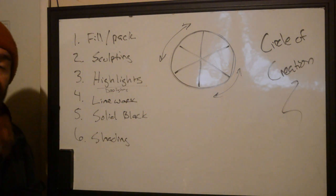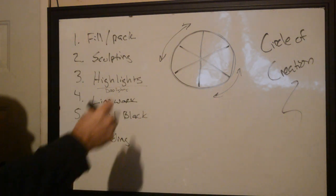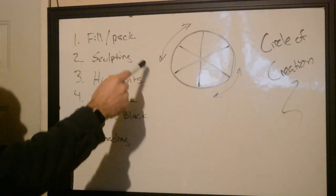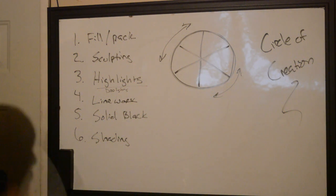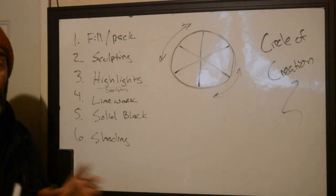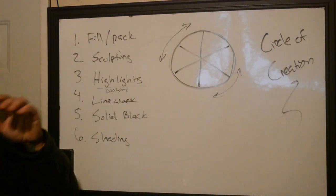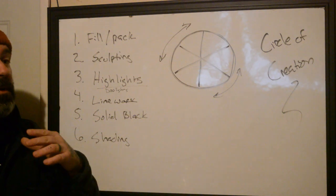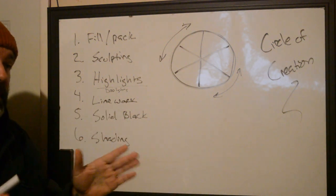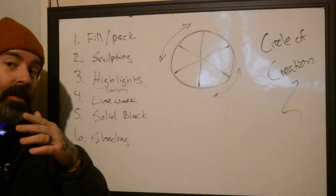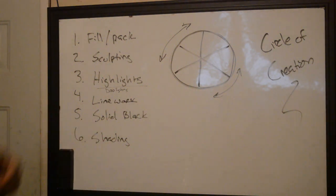So we decided just to go to the art. Simple homework which we have every week with this class. We just come in, we got one design and this week's homework was you have to start at each one of these points, right? Fill pack, sculpting, highlights, or drop lights, line work, solid black, and shading. That's where you start your design. So we're gonna have six different variations of the same base idea, which was a sacred heart, really simple. And you have to have a break in between each one, 15 to 20 minutes till you get it done. So it has to be a quick sketch, and then at the end of it we were going to look at the designs side by side.